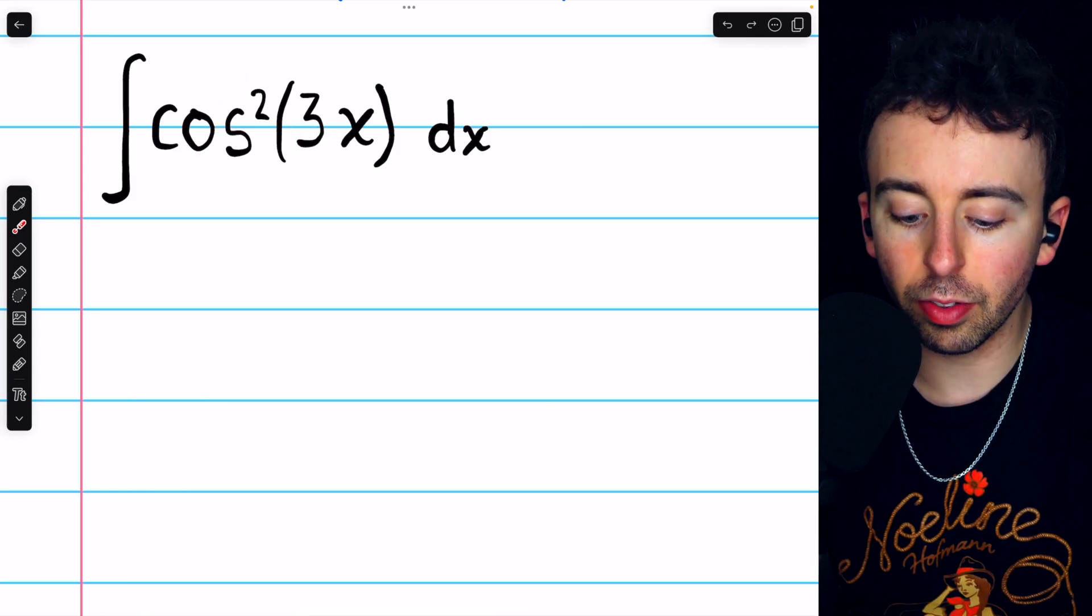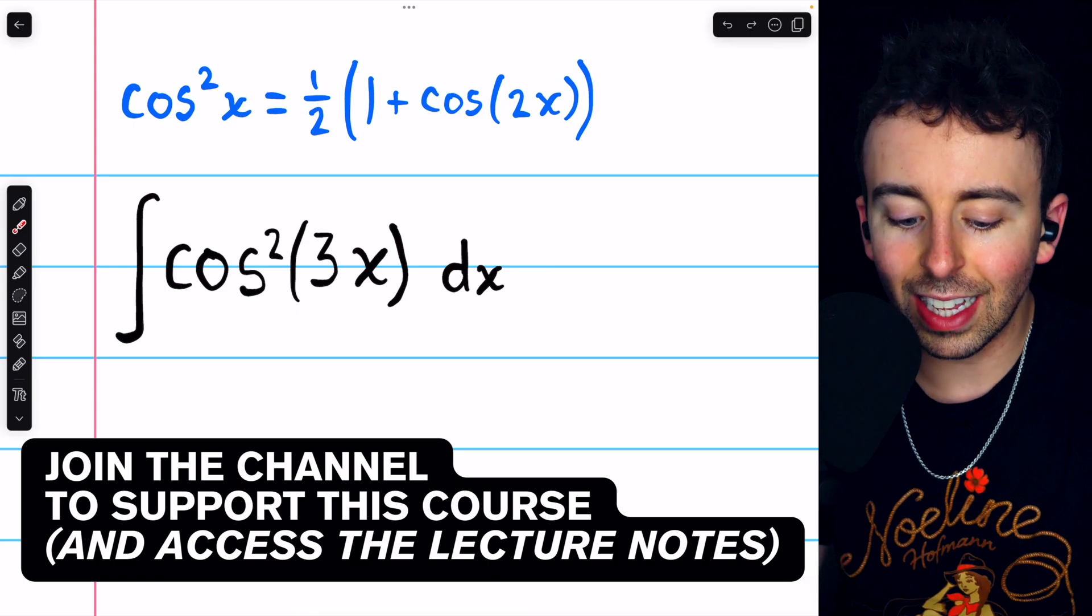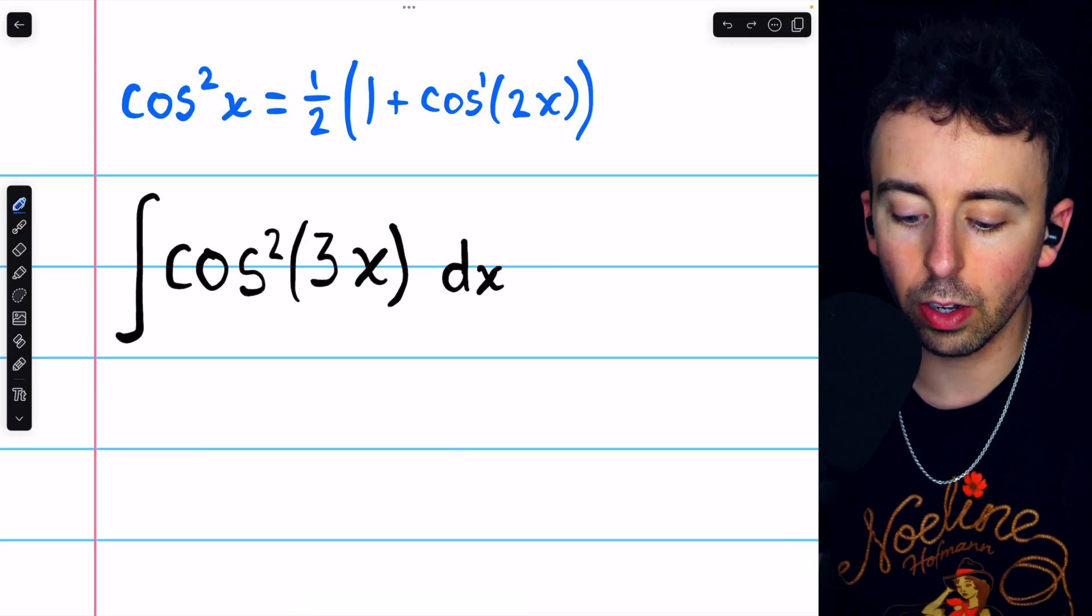To integrate cosine squared of 3x, we need to use this identity, which lets us reduce the power of 2 to a power of 1.